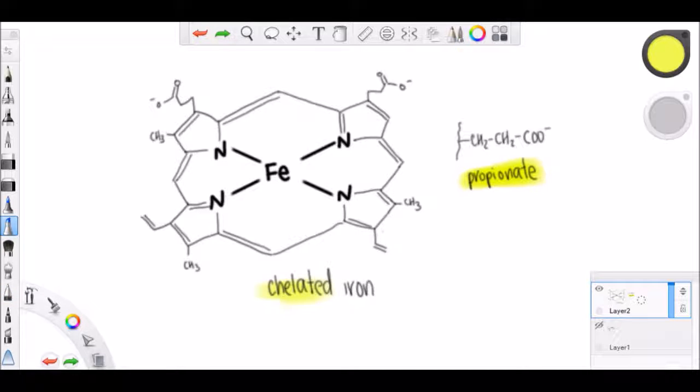This is another functional group that I think is important. Porphyrin is a conjugated double bond system responsible for the color of blood.